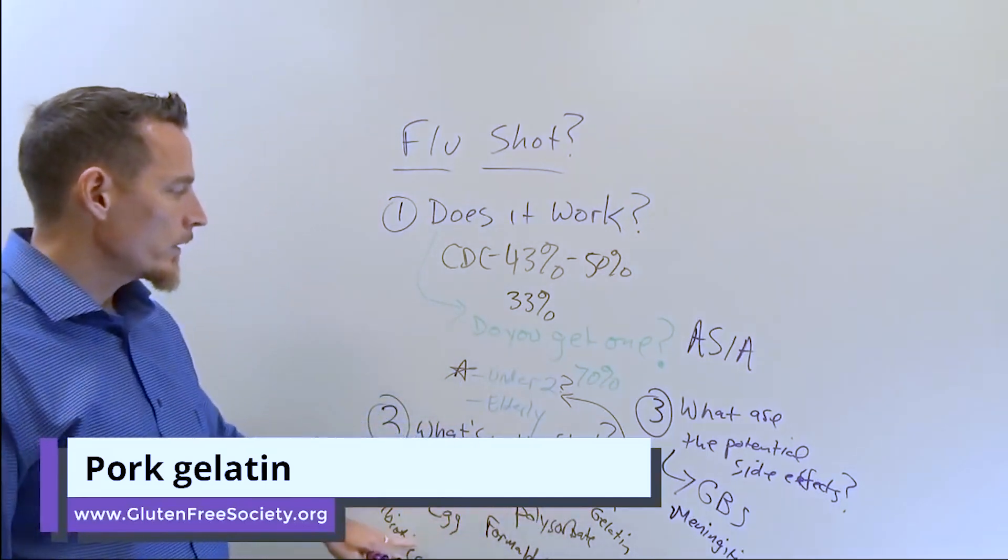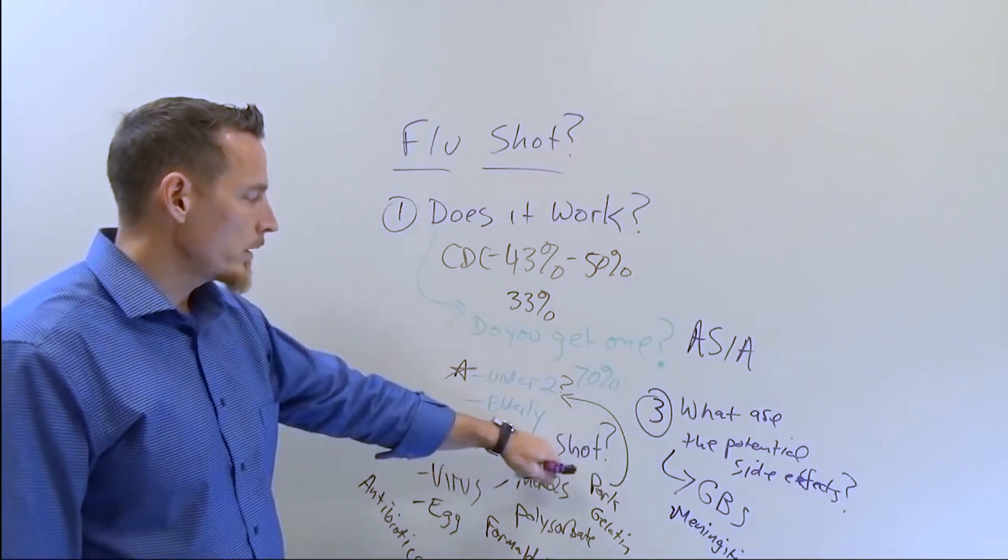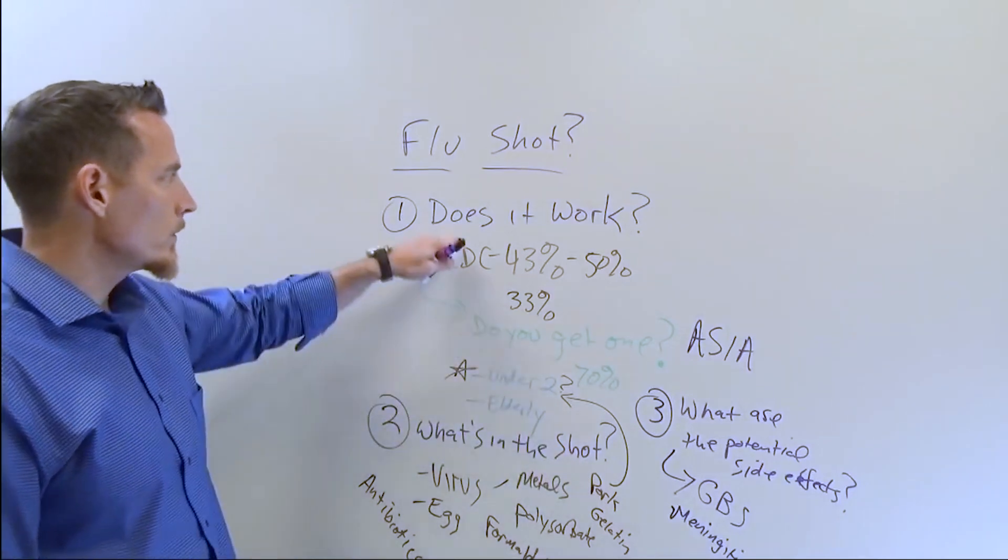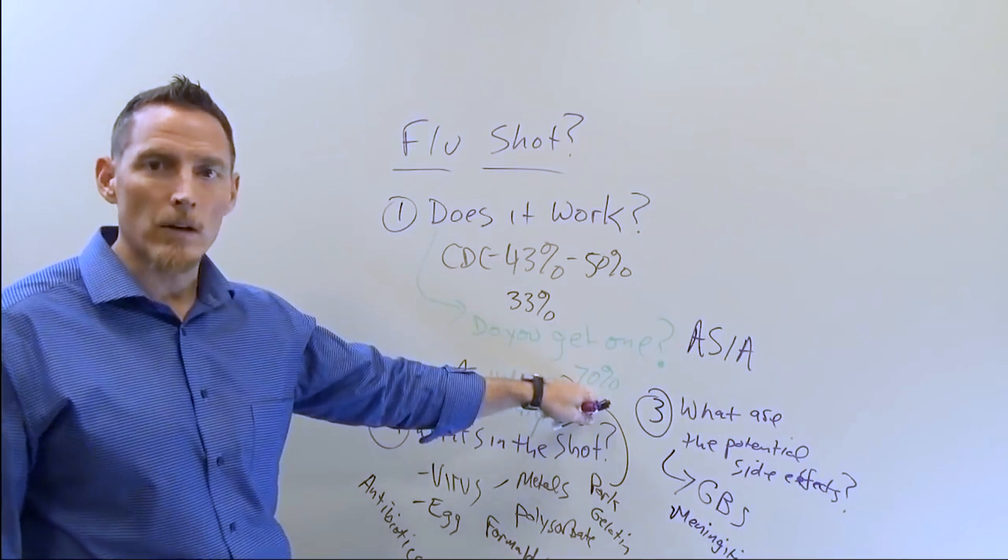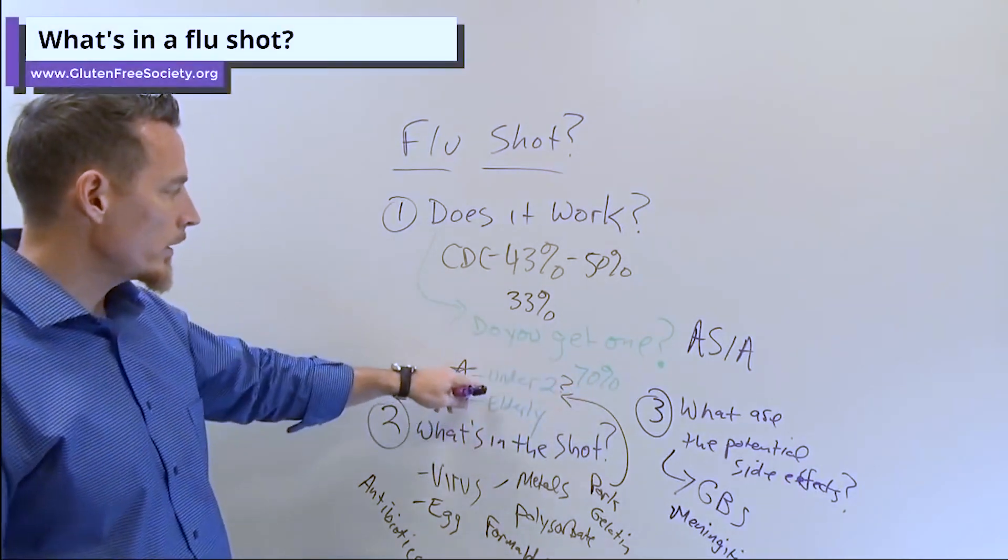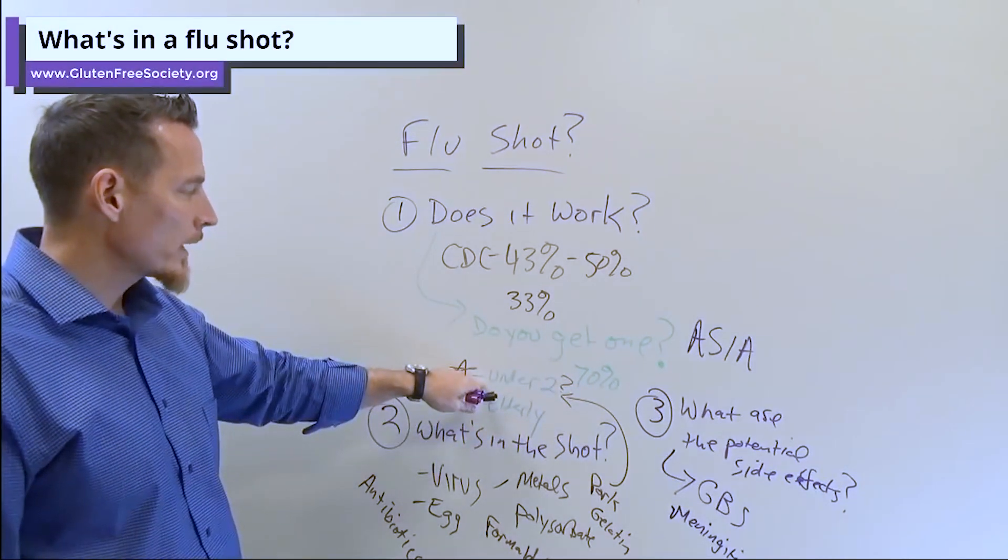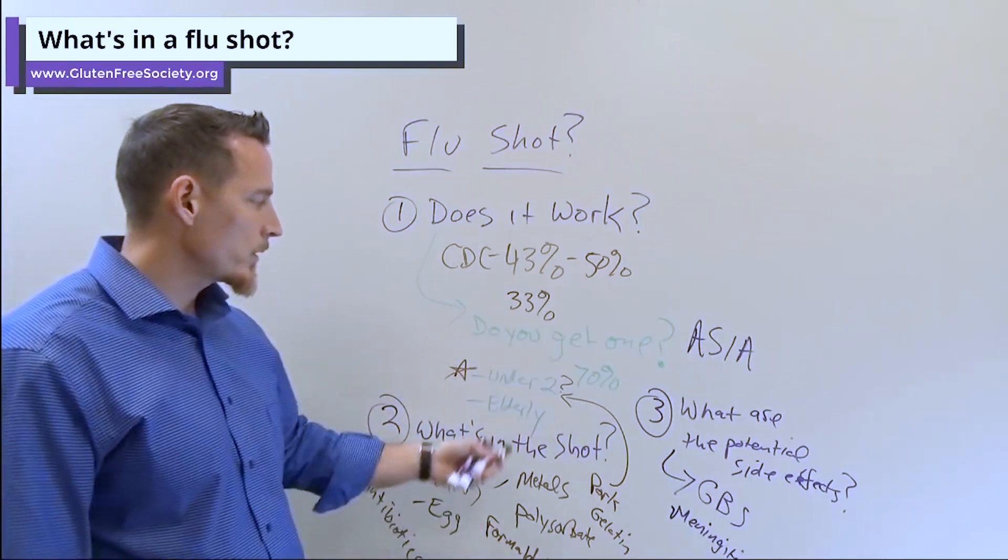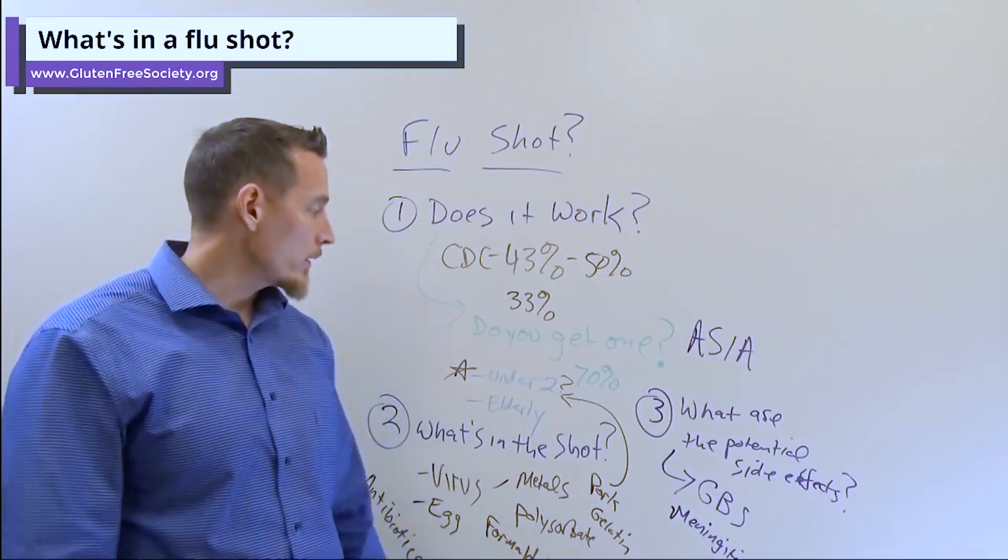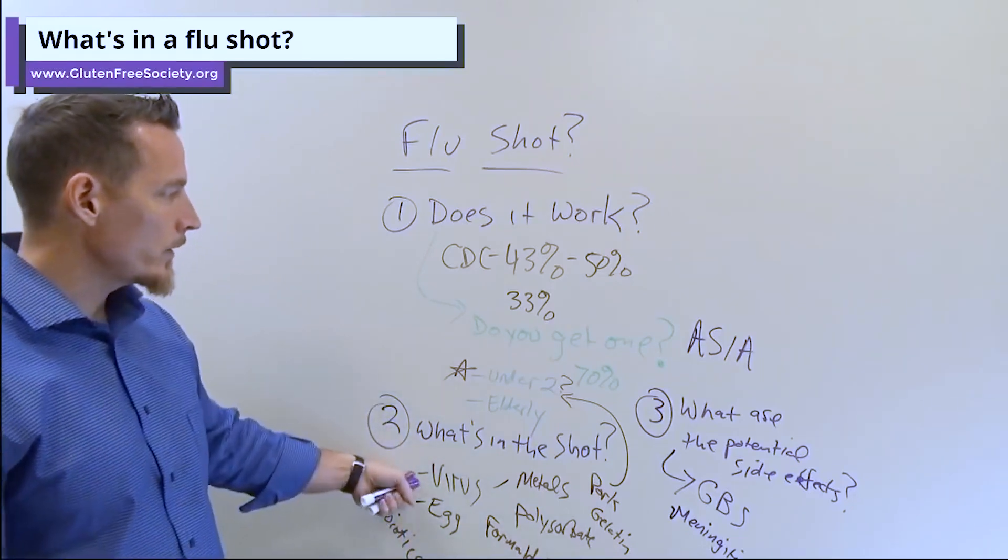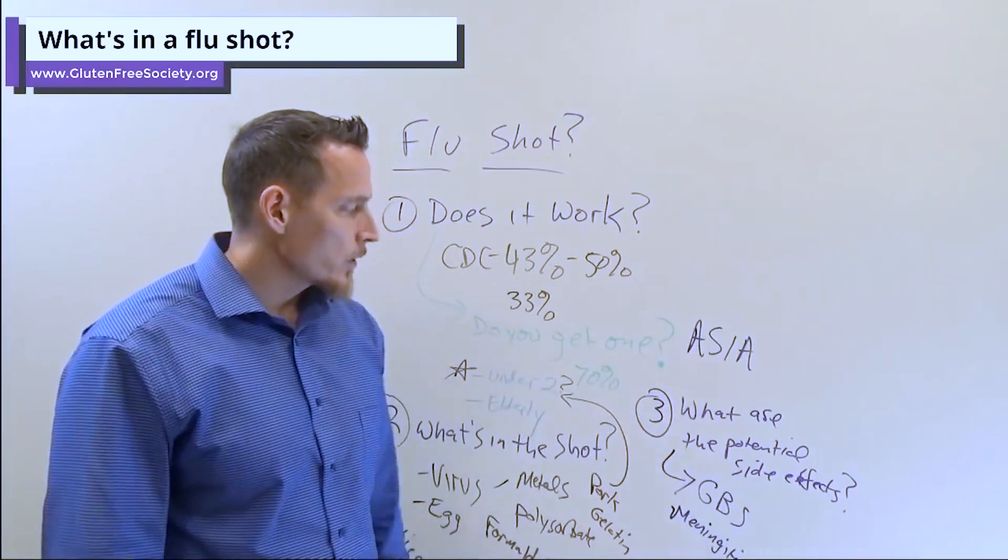These are some of the common ingredients within a vaccine. Now we know what's in the shot. We know does it work? 43% of the time do doctors get it. About 70% don't. We know that under two it's very common to have egg allergy but no doctors are really testing for egg as a potential allergen reaction even though they're injecting it in anyway. And then we have what are the potential side effects.